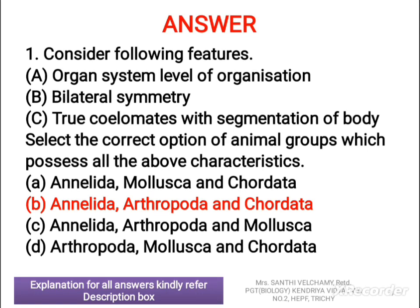The correct answer is B — Annelida, Arthropoda, Chordata. That group is correct because Mollusca shows organ system level of organization with unsegmented body. So A cannot be correct, C and D cannot be correct. The correct answer is B.